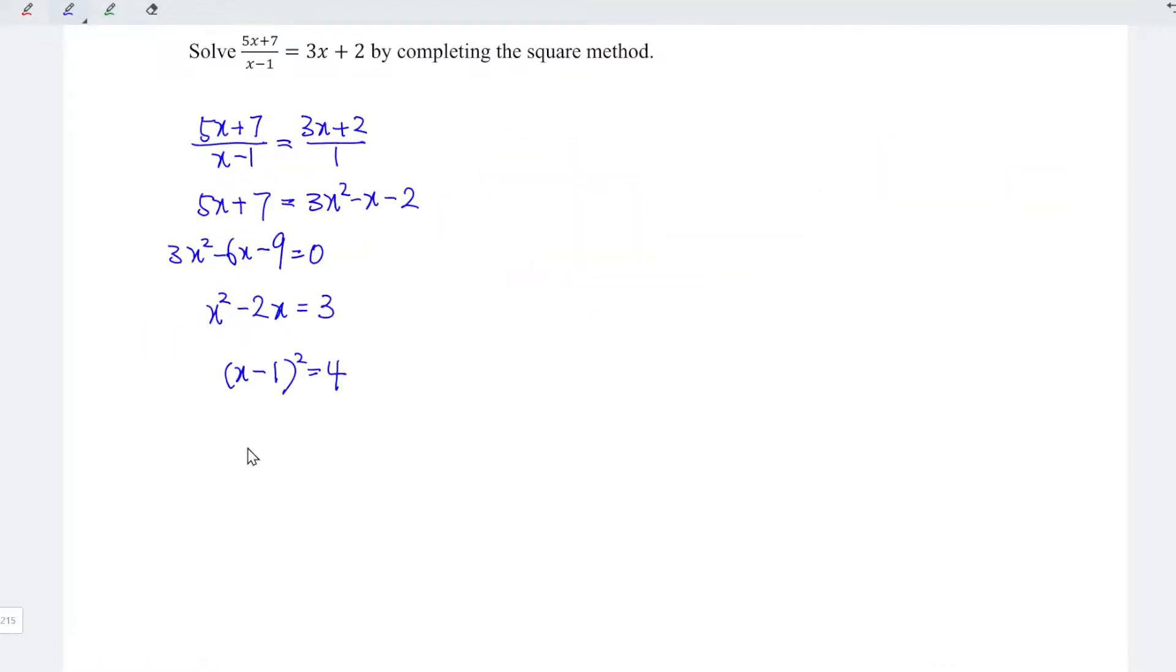Next, let's square root both sides. Square root and square cancel each other. So we have x minus 1. And this is equal to square root of 4. Remember to add plus minus. And this is equal to plus minus 2, which means that we should have two solutions here.